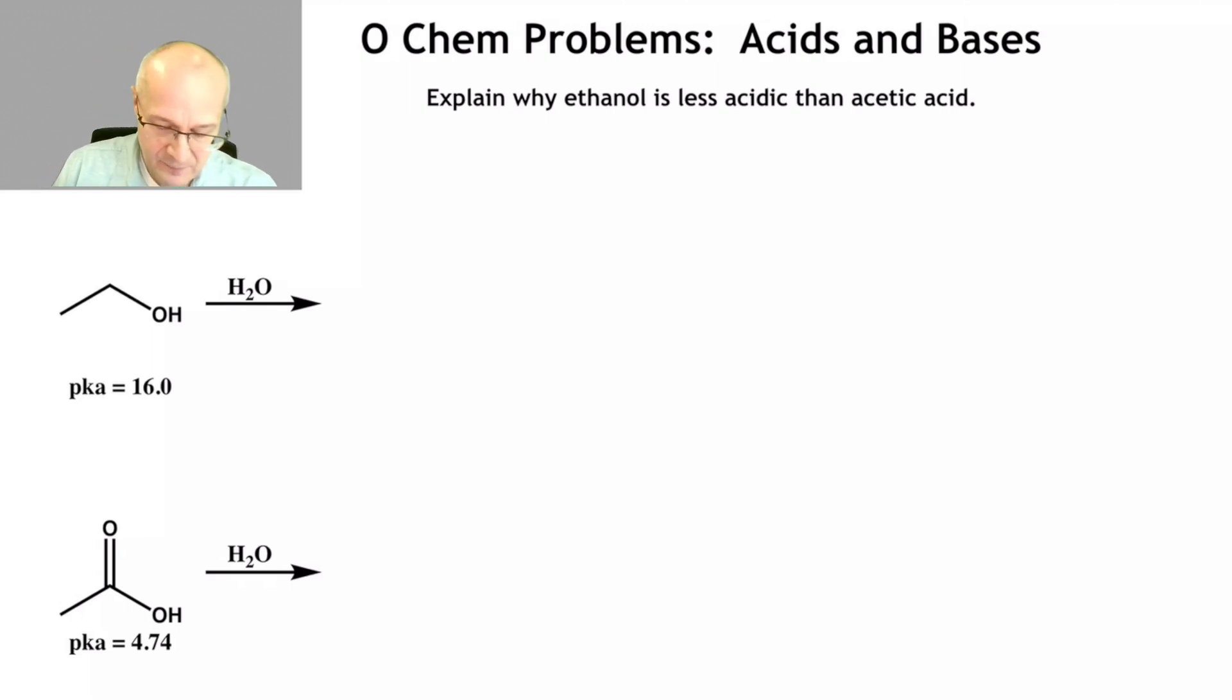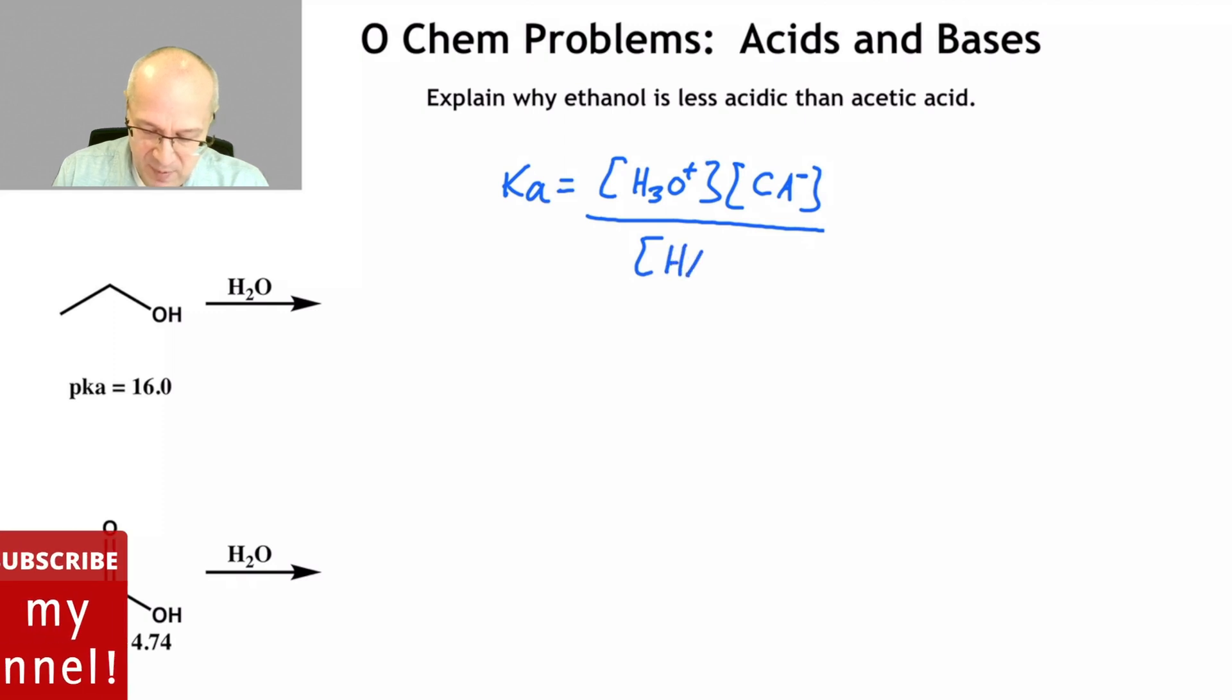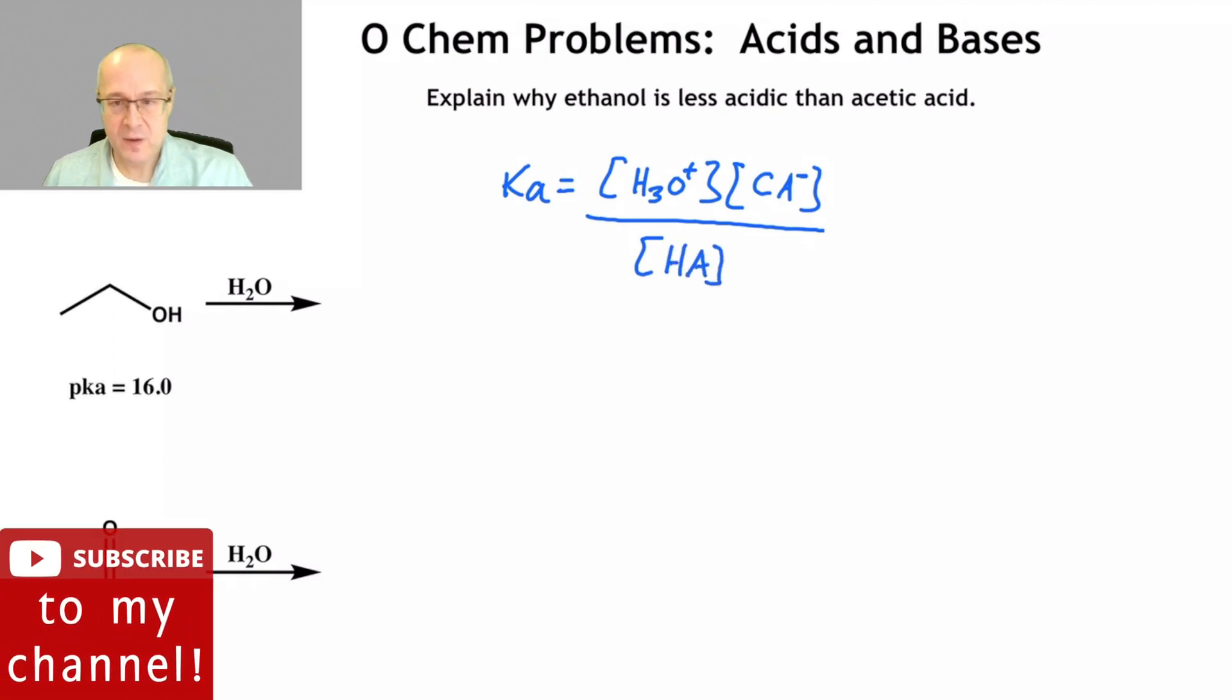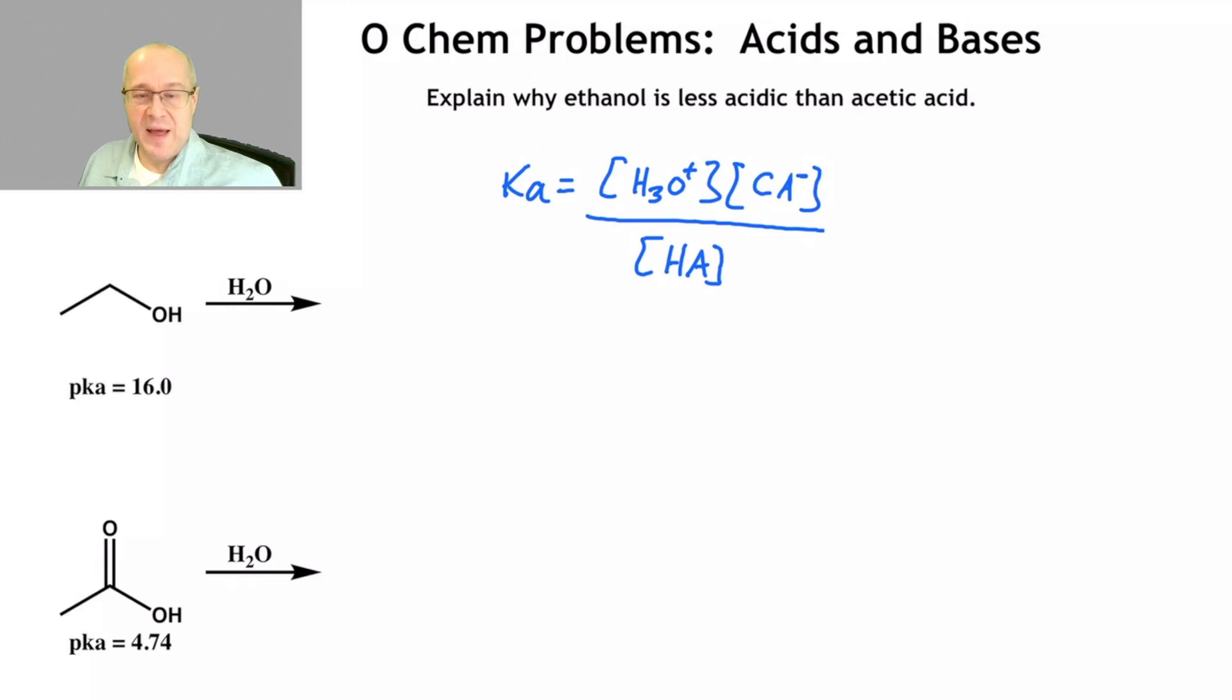And what's Ka? Well, Ka is the concentration of hydronium, because we're dealing with acids and bases in water, times the concentration of the conjugate base, and that is all divided by the concentration of the parent acid. So that is Ka.